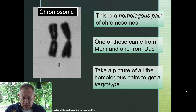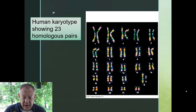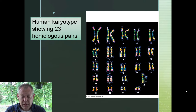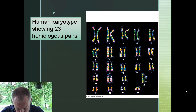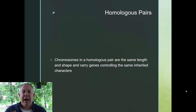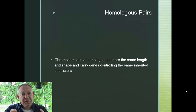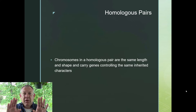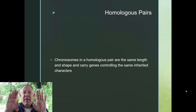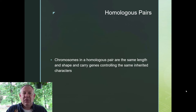If you take a picture of all the homologous pairs and put them together, that's called a karyotype. Here's a human karyotype showing the 23 homologous pairs that we have. We have 46 total chromosomes, but they're arranged as 23 pairs. Homologous pairs pair up and match together because they're very similar — they have the same length, the same shape, but most importantly they carry the same genes on them. The chromosome you got from your mom and the chromosome you got from your dad have the same genes in the same location. That's why they can pair up.